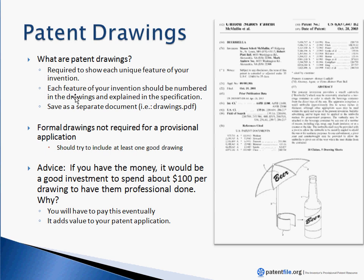The nice thing about provisional patent applications is that formal drawings are not required. There's a whole stack of rules and guidelines you have to follow when you file formal drawings — things like margin size, the width of the lines, the type of paper — but for provisional patent applications, you don't need to follow those formal requirements because no one at the patent office is actually going to look at your drawings and evaluate them.